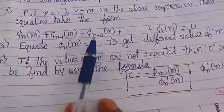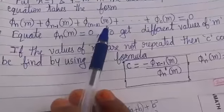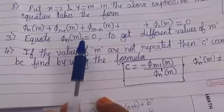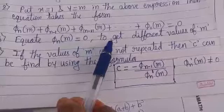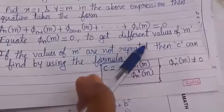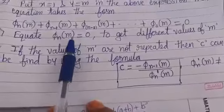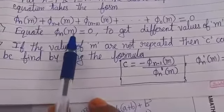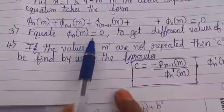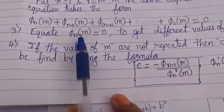Then equate φₙ(m) = 0 to get different values of m. When you equate φₙ(m) to 0, you will get an equation like a quadratic or cubic, which you have to solve to get the values of m.